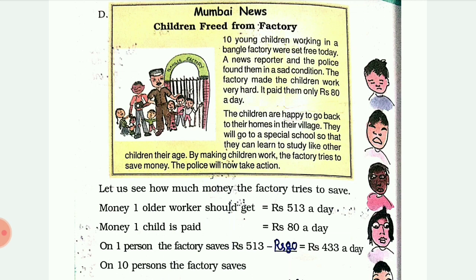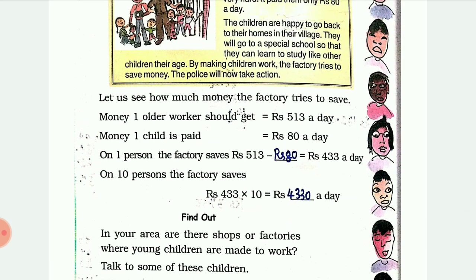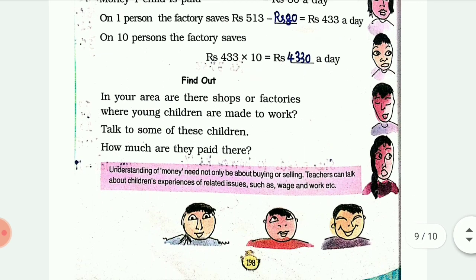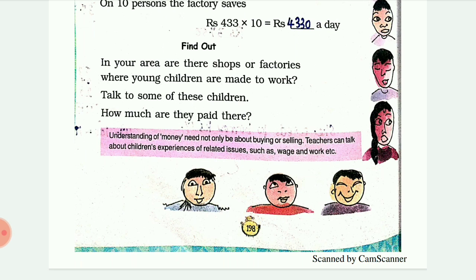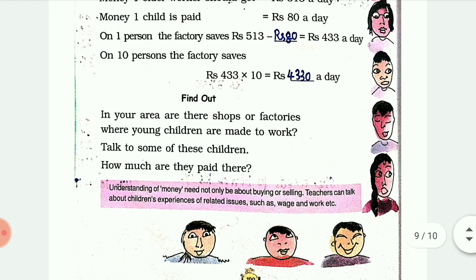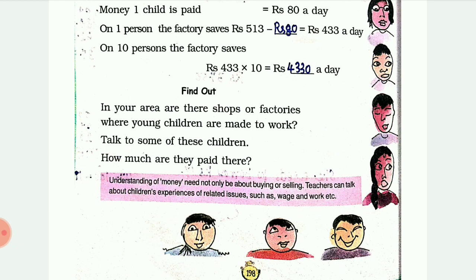By making children work, the factory tries to save money. One older worker should get rupees 513. One child is paid rupees 80. So the factory saves 513 minus 80 equals 433 rupees per child per day. For 10 persons it is saving 433 rupees total per day.